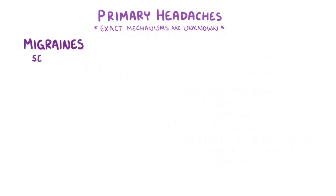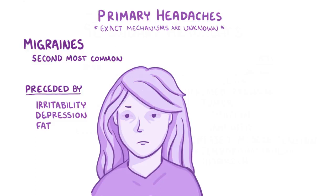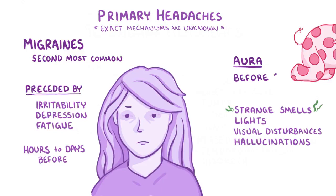Migraines are the second most common primary headache. They're often preceded by symptoms like irritability, depression, and fatigue that can begin hours to days before the headache itself. Sometimes there can be an aura where people experience strange smells, lights, visual disturbances, or even hallucinations before the onset of the migraine.